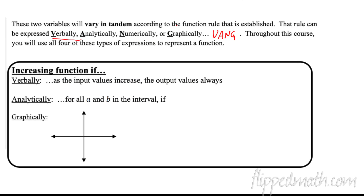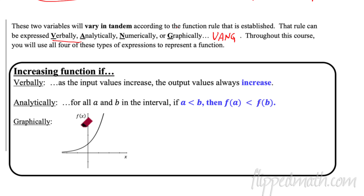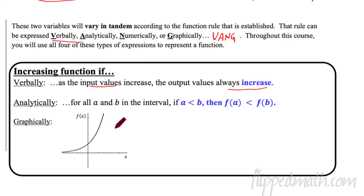A function is increasing — we say verbally — as the input values increase, the output values always increase. So as you go to the right on the horizontal axis (input values), the output values on the vertical axis always go up. That's what it means verbally to be an increasing function.